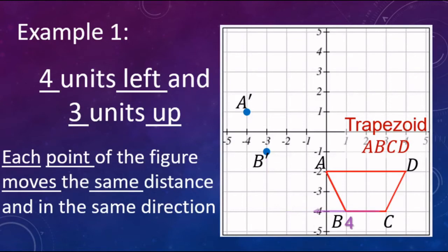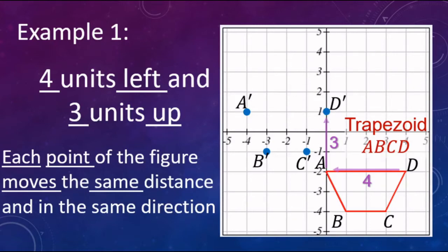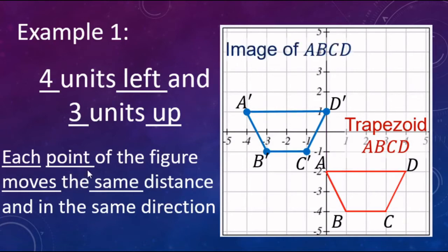And then the final vertex D goes four to the left and three up, so D prime is right there on the y-axis where y is one. Finally, just connect all the dots. With translations, you take each vertex and move it the same distance — in this case, four to the left and three up. So there's our image of trapezoid ABCD, also known as A prime, B prime, C prime, D prime.